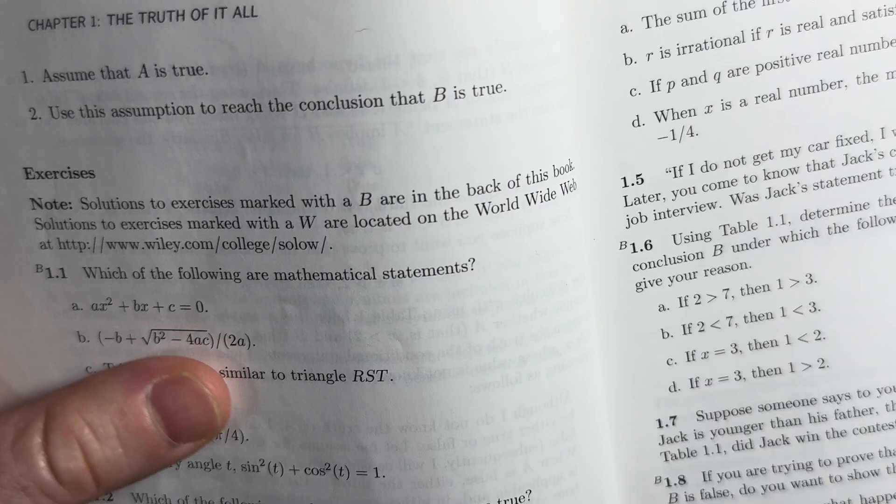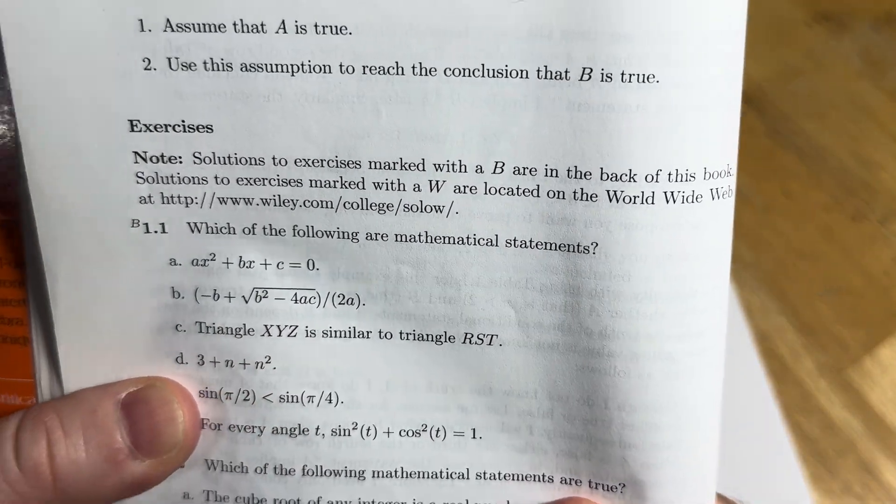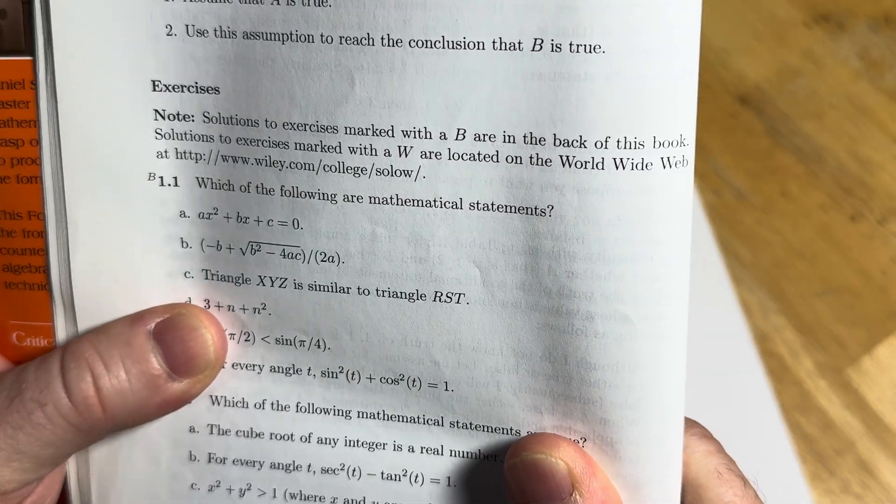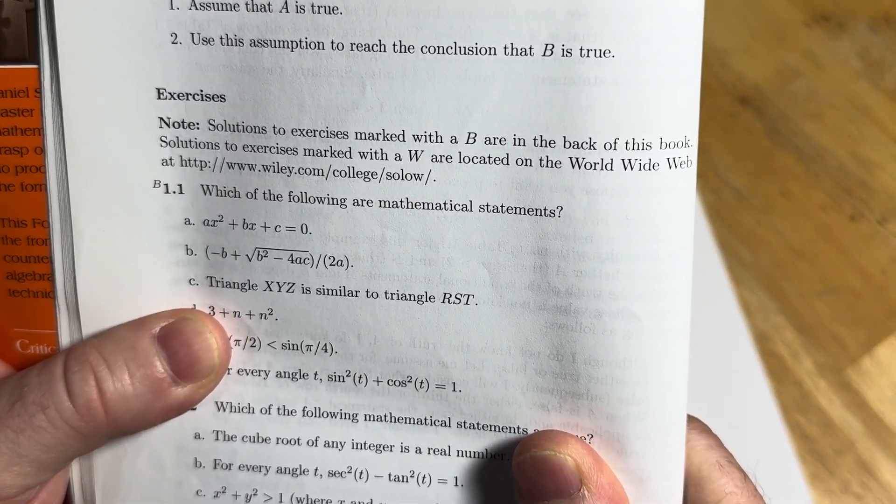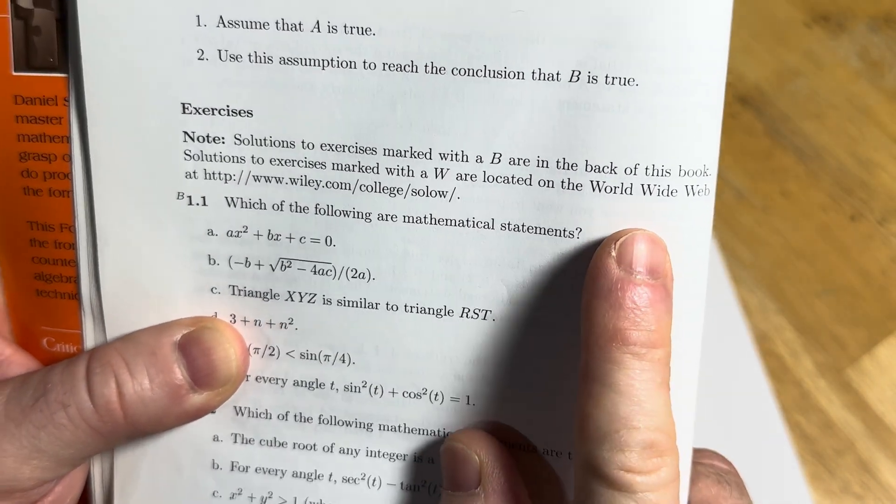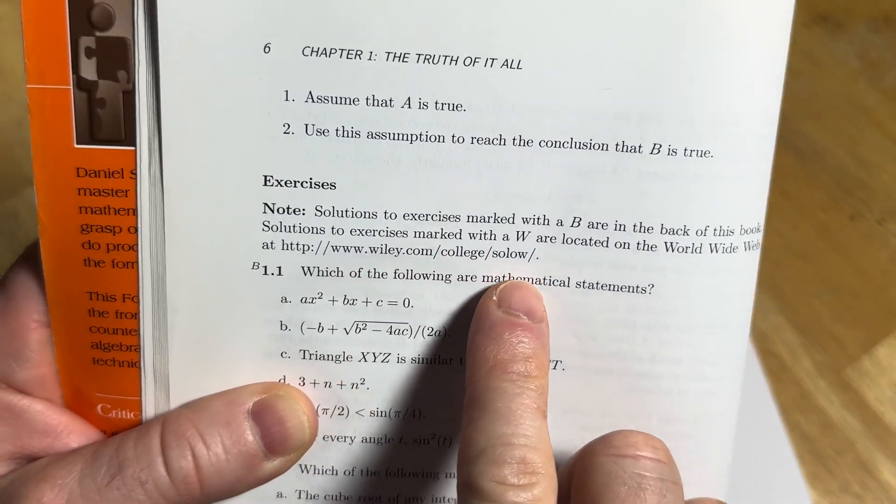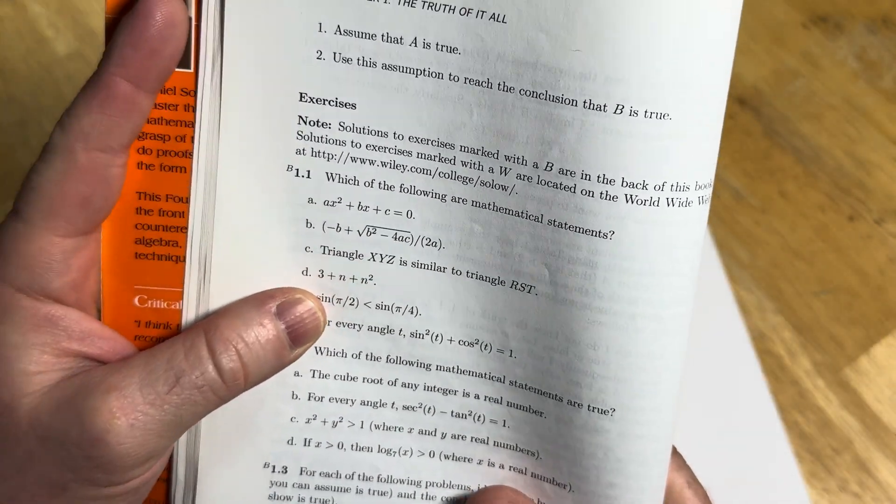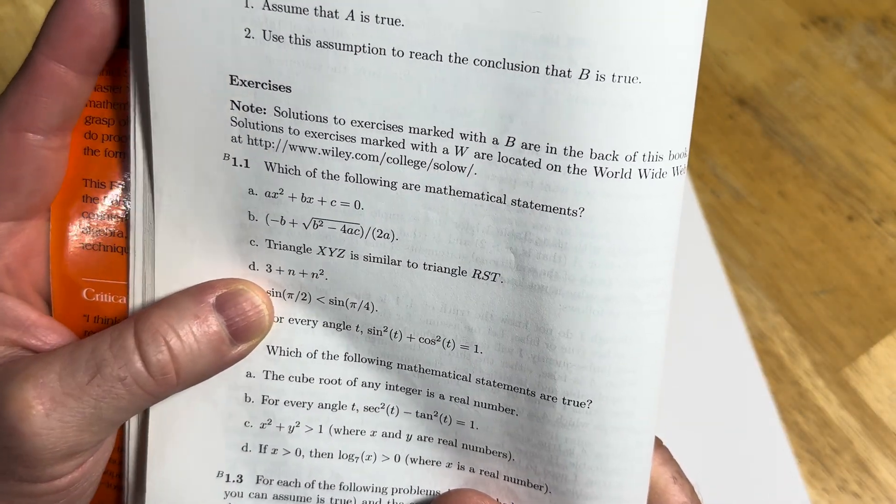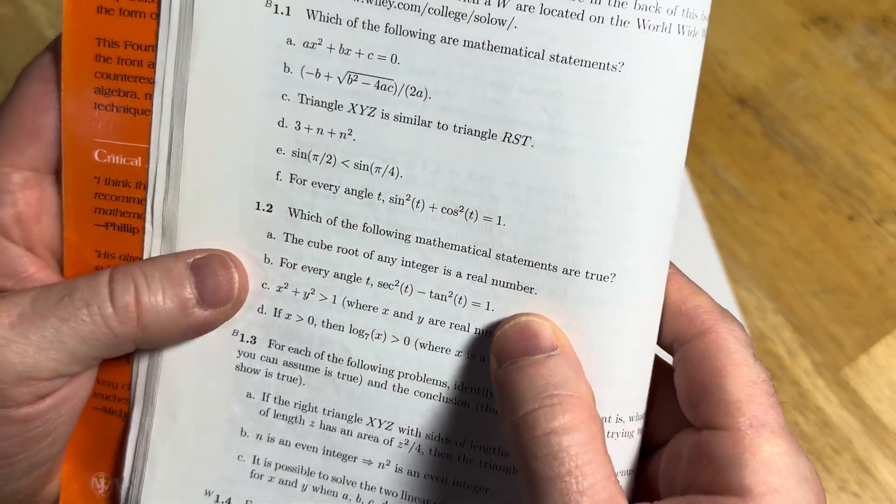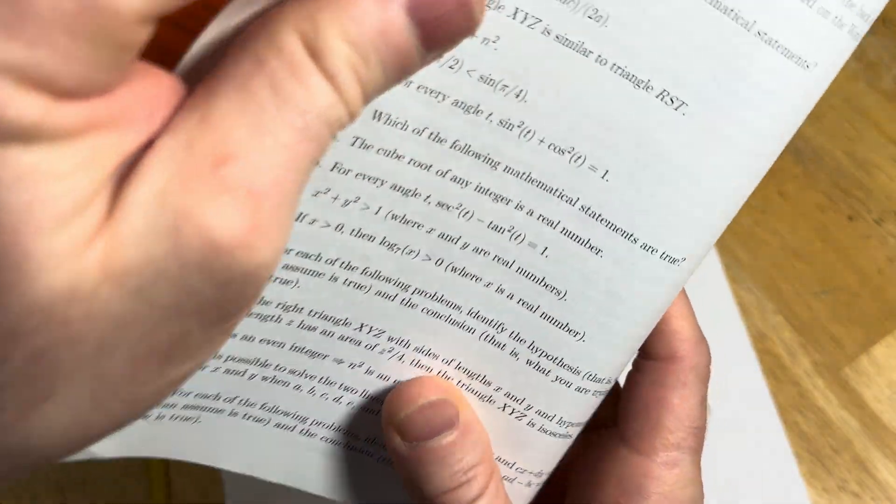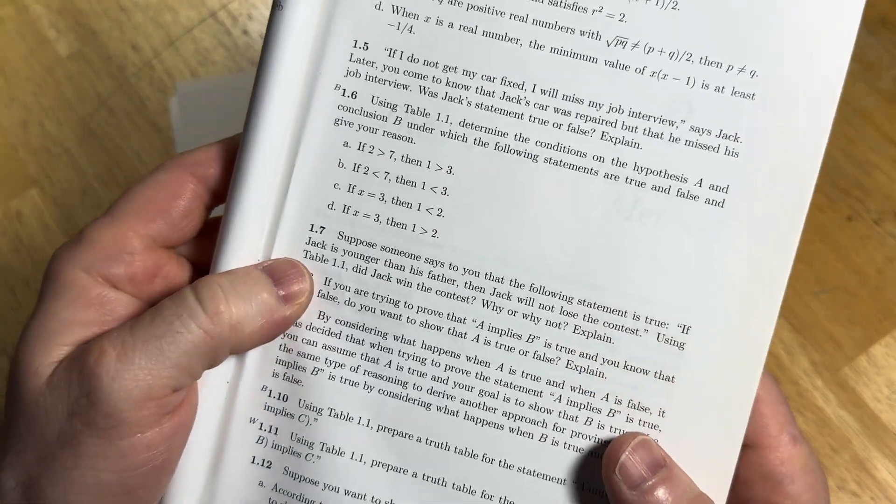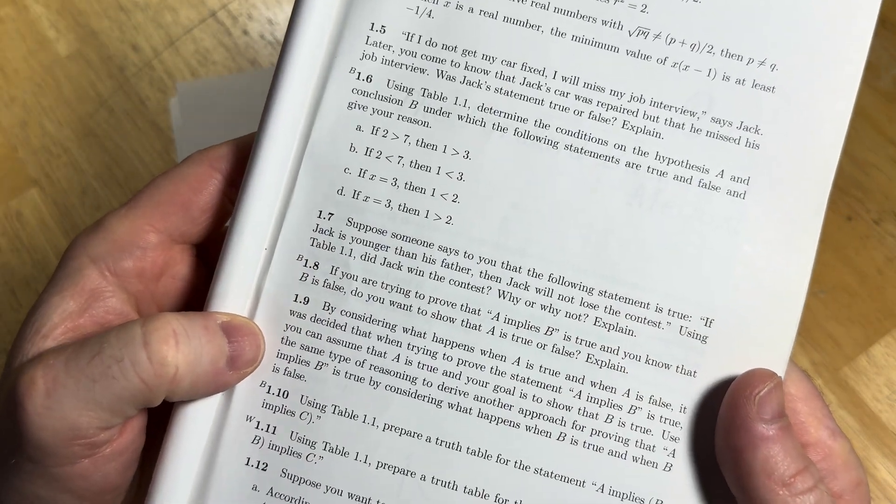Look what it says here, talks about some exercises, it says to read this together. Solutions to exercises marked with a B are in the back of the book. Solutions to exercise marked with a W are located on the World Wide Web at, and then they have a World Wide Web. Yeah, this is old, right? It's an older book. Which of the following are mathematical statements? You have some statements here. So it's just different types of questions that you can answer.